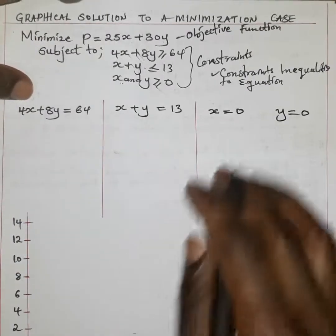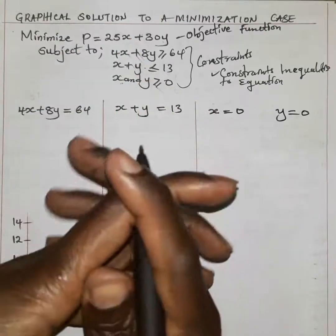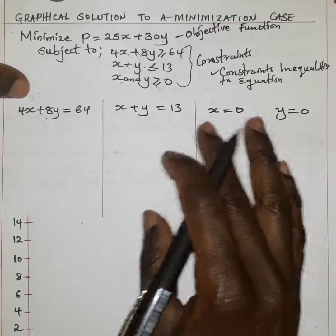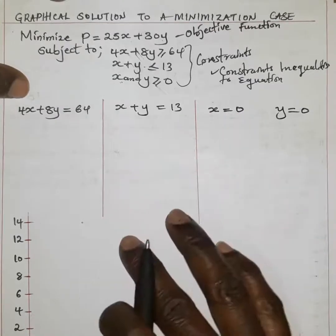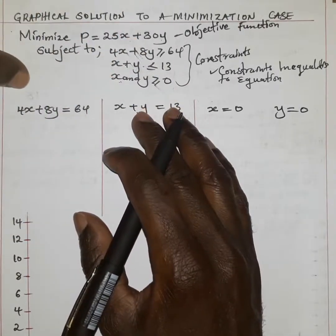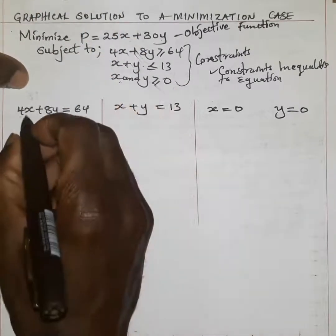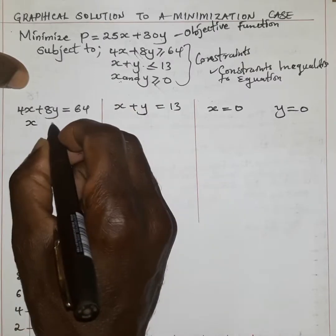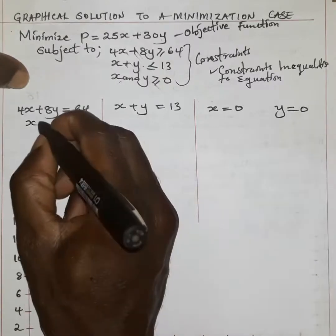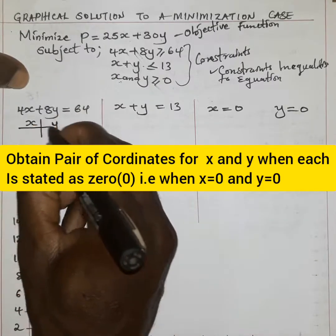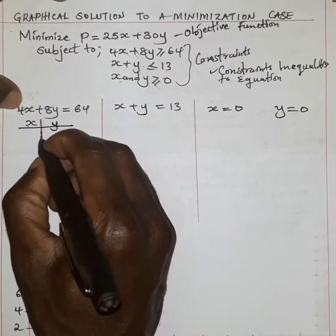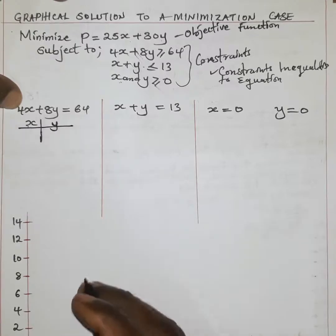The second step is to get a pair of coordinates which we are going to plot. How do we get the pair of coordinates? By getting the corresponding values of Y and X when each is 0. For example, when X is 0, what will be the value of Y? And when Y is 0, what will be the value of X?